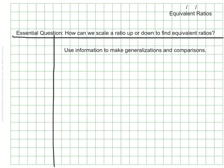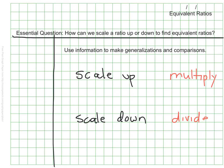Sometimes we know a ratio and can use that information to make generalizations or comparisons. We can do one of two things: scale it up or scale it down to find equivalent ratios. To scale up we multiply, and to scale down we divide. We never use addition or subtraction when scaling ratios.